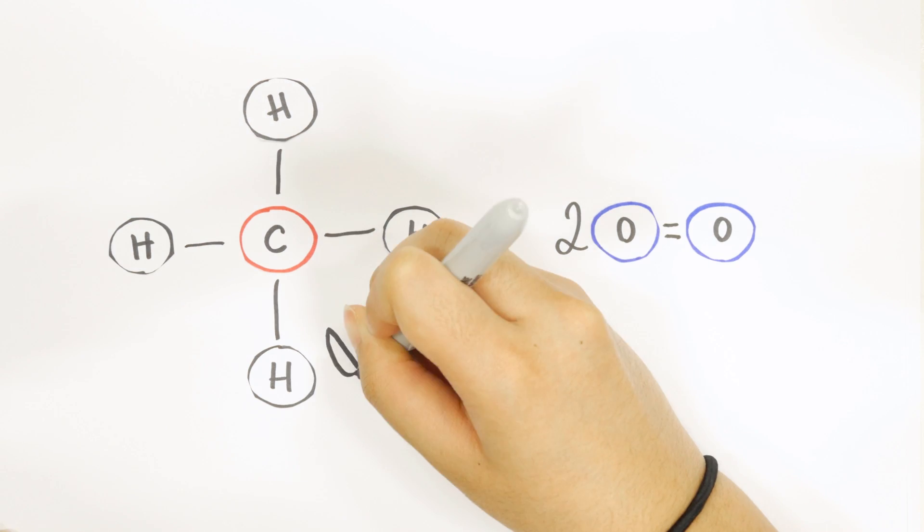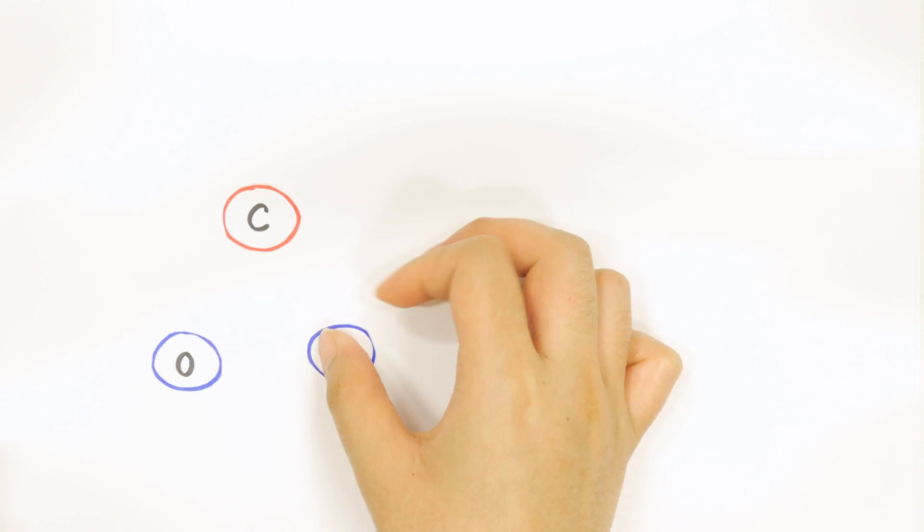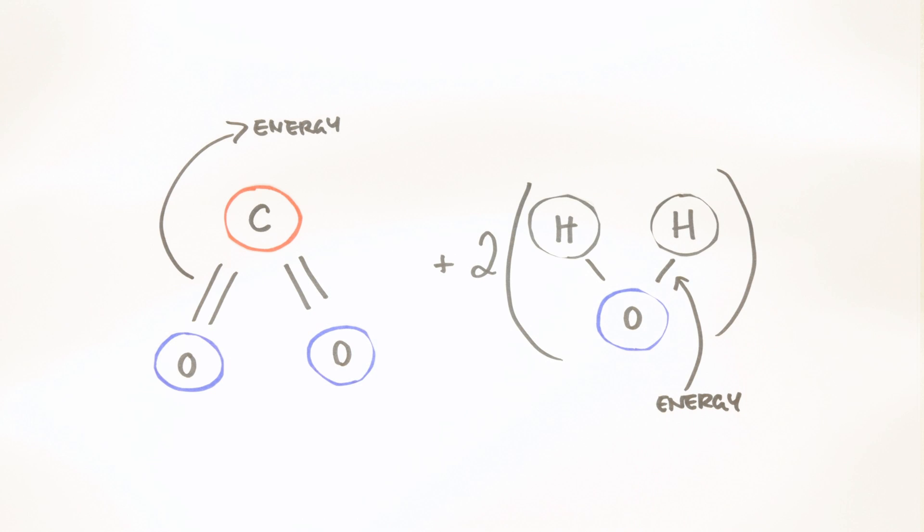Atoms are joined together by bonds to create molecules. Breaking bonds requires energy and making bonds releases energy. When two chemicals react together existing bonds are broken and new bonds are formed.